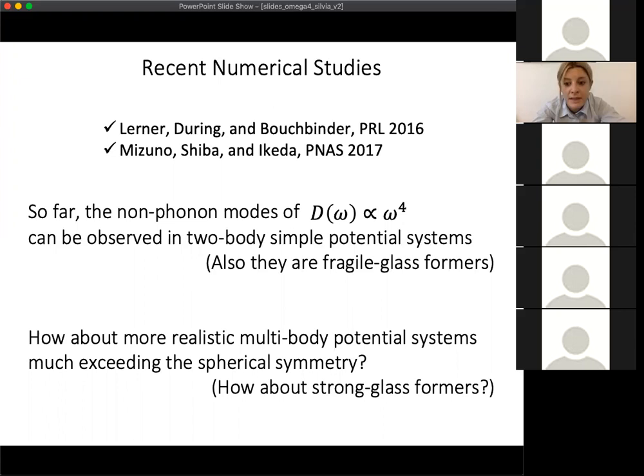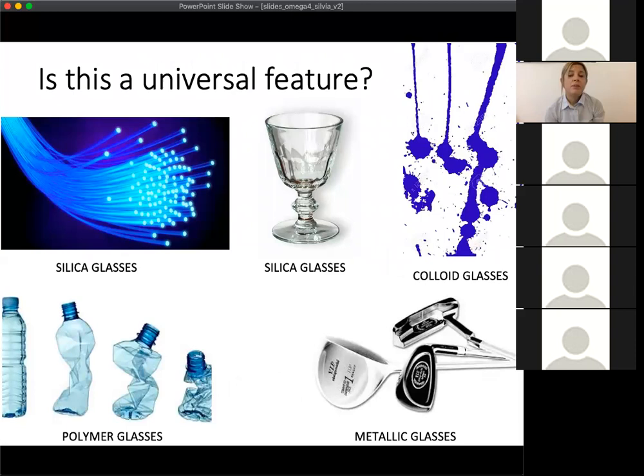There are other ways to detect this non-phonon contribution. For example, in PNAS 2017 by the Ikeda group, they focus on the participation ratio. However, so far the non-phonon modes of ω proportional to ω^4 have been observed only in simple two-body potential systems that are useful for developing theoretical models of glasses. They also describe fragile glass formers. Nothing was done for more realistic glasses.